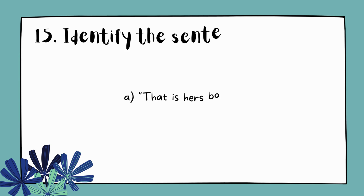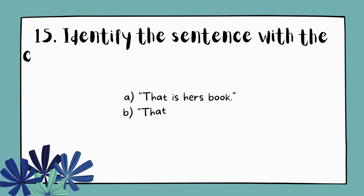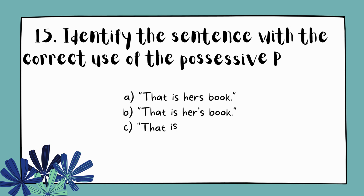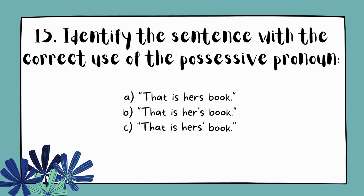Question 15. Identify the sentence with the correct use of the possessive pronoun. A. That is hers book. B. That is hers book. C. That is hers book. D. That is her book.